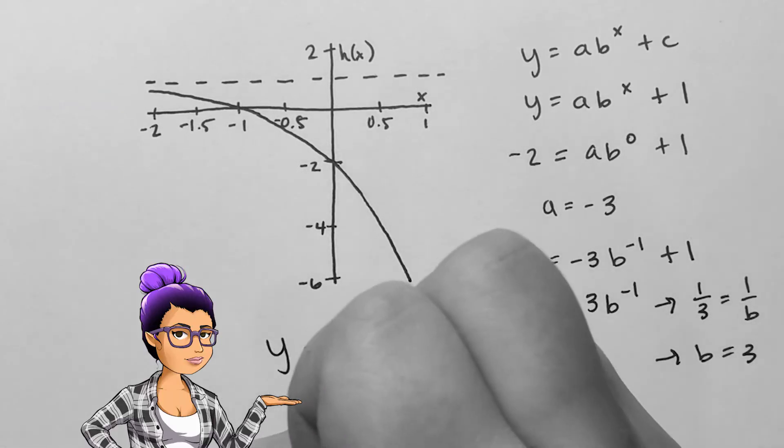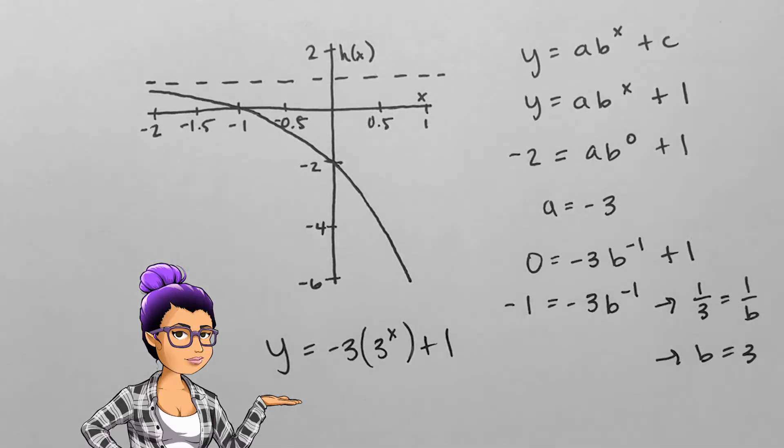The exponential function is h of x equals negative 3 times 3 to the x power plus 1.